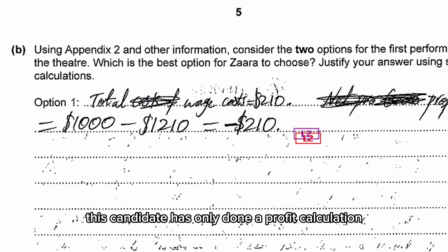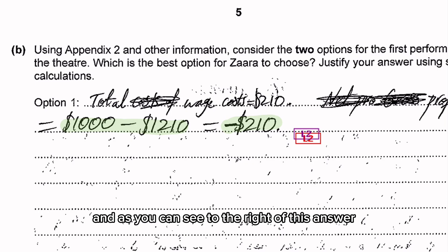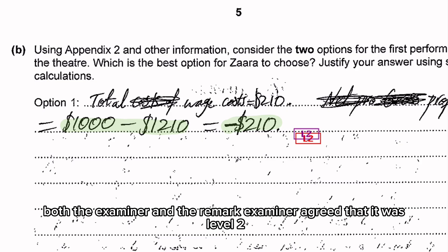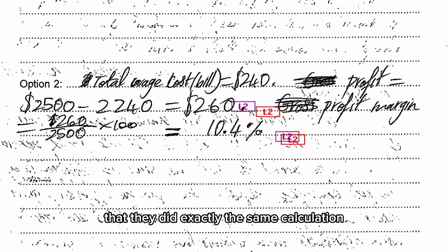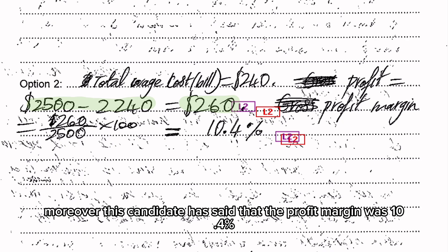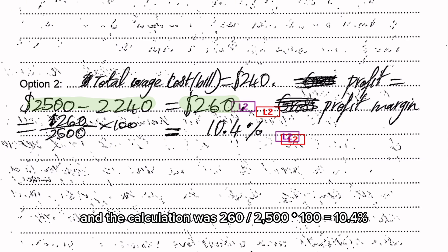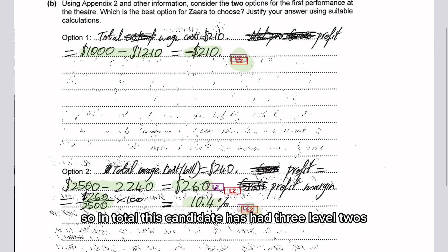As you can see for option 1, this candidate has only done a profit calculation, which was 1000 minus 1210 equals minus 210. And as you can see to the right of this answer, both the examiner and the remark examiner agreed that it was level 2. There's very little writing. Similarly for option 2, they did exactly the same calculation — the profit was 2500 minus 2240 equals 260, and that was issued at level 2. Moreover, this candidate stated that the profit margin was 10.4%, calculated as 260 divided by 2500 times 100 equals 10.4%, and that was issued another level 2. So in total, this candidate has had three level 2s.